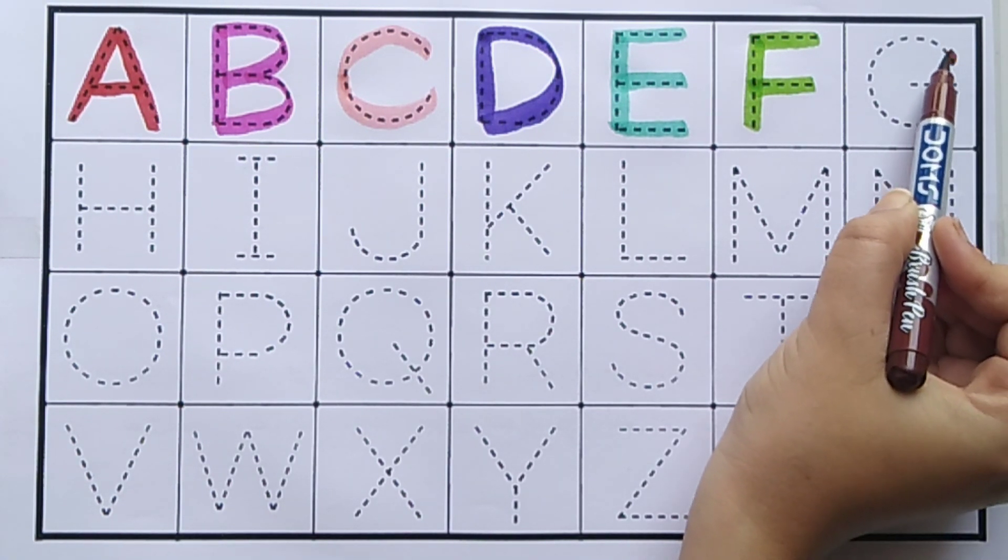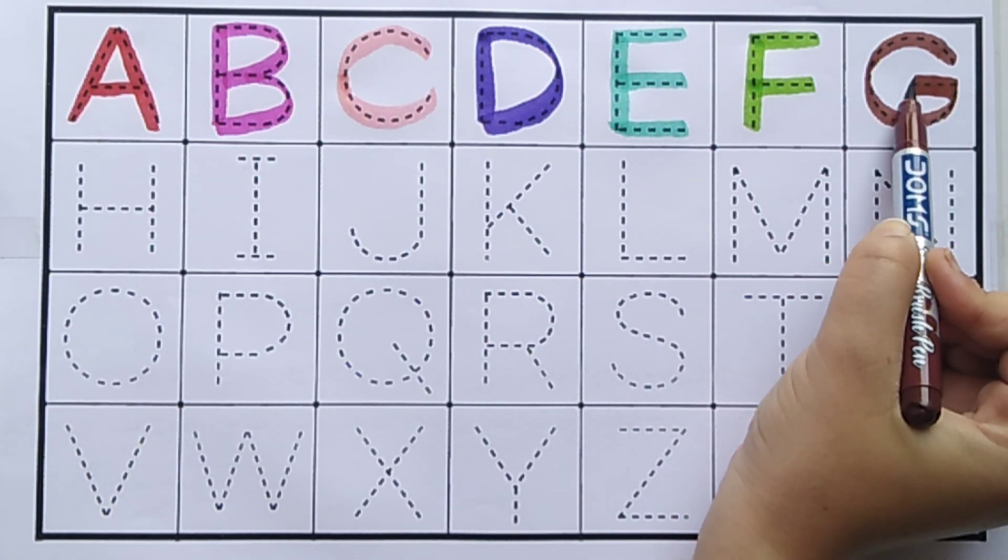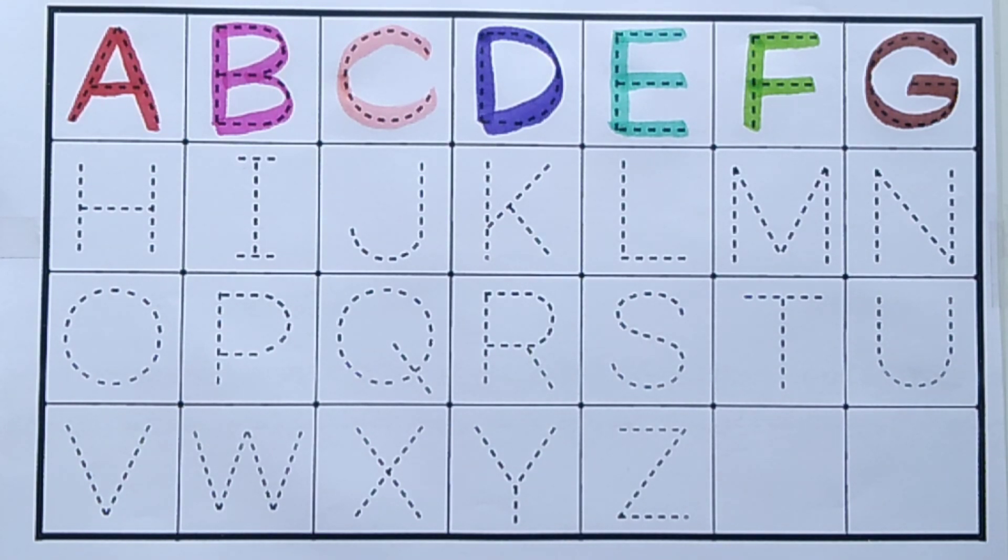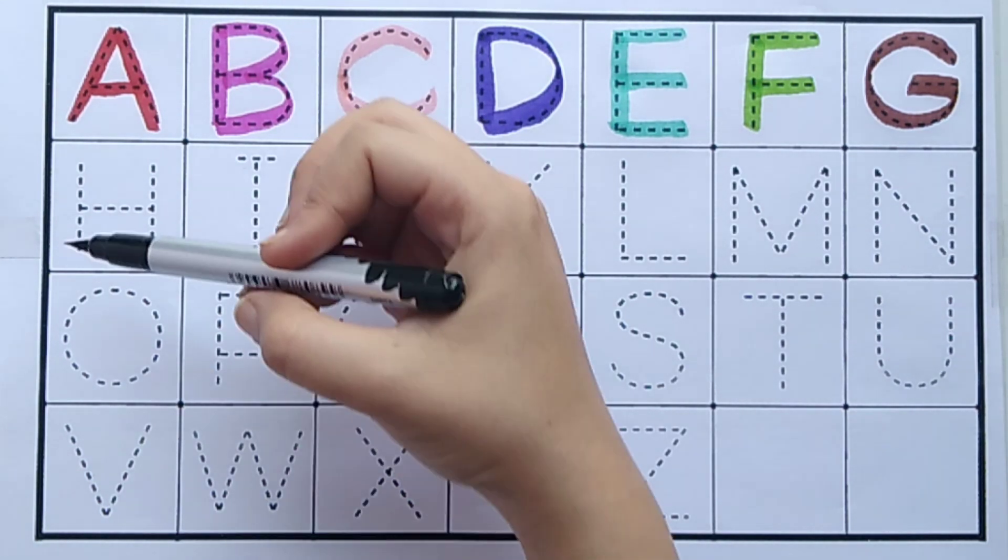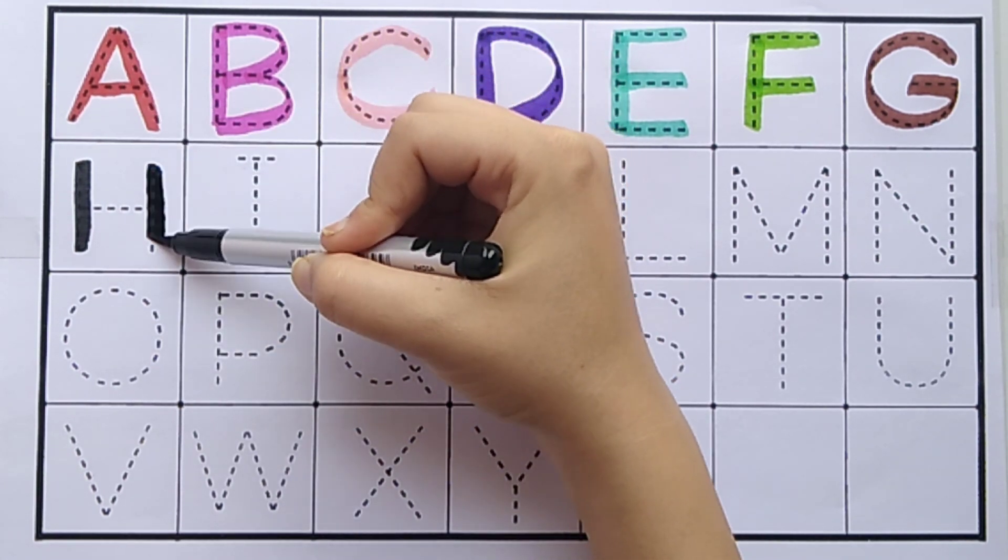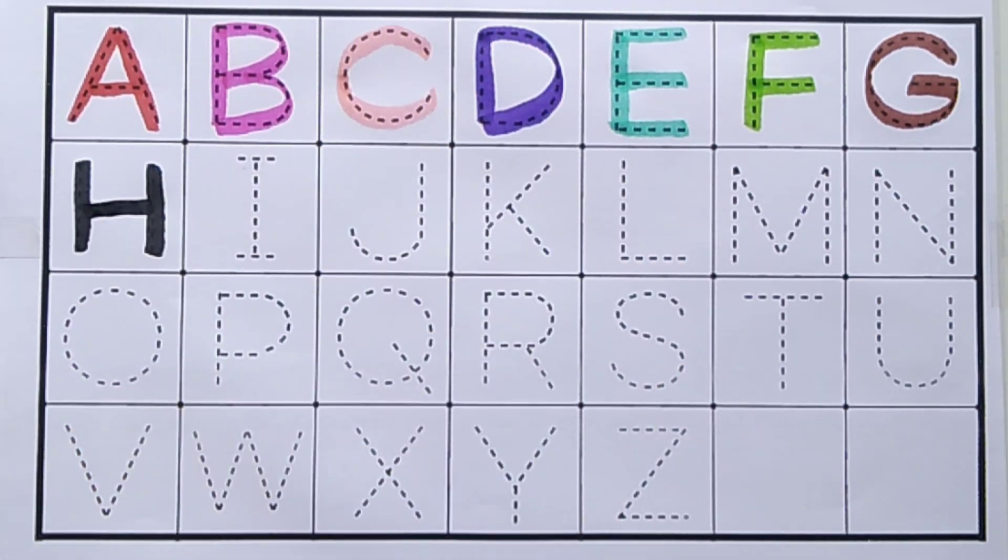Brown color. G, G for goat. Black color. H, H for hen.